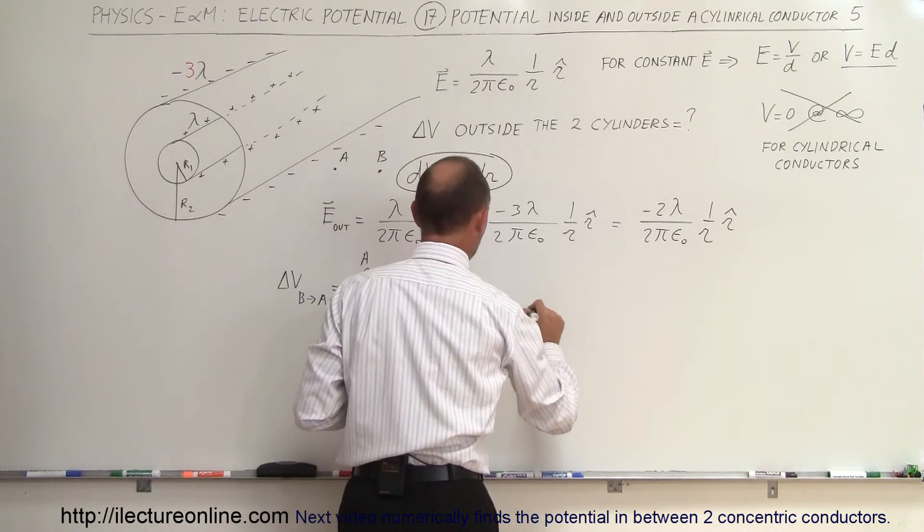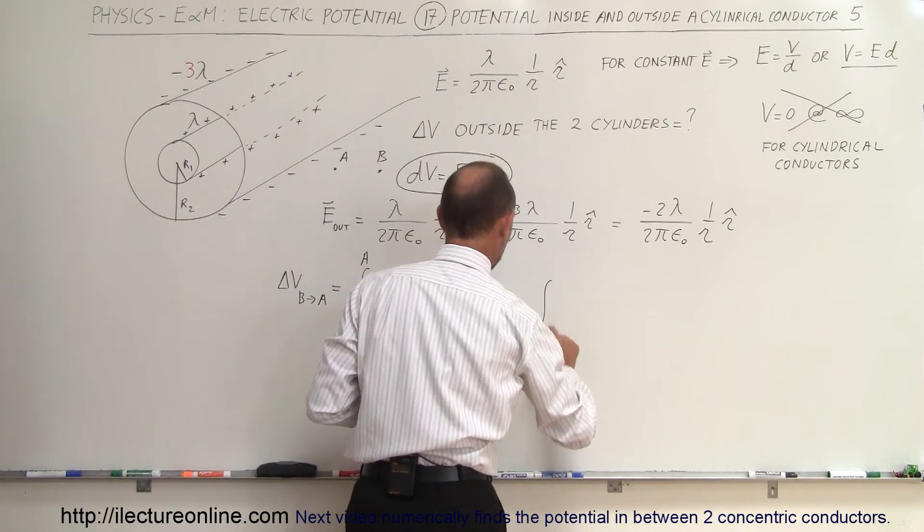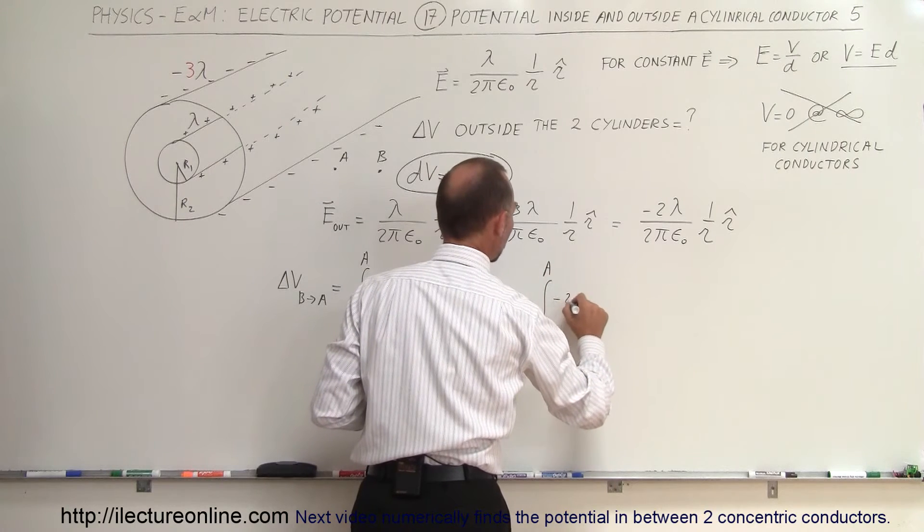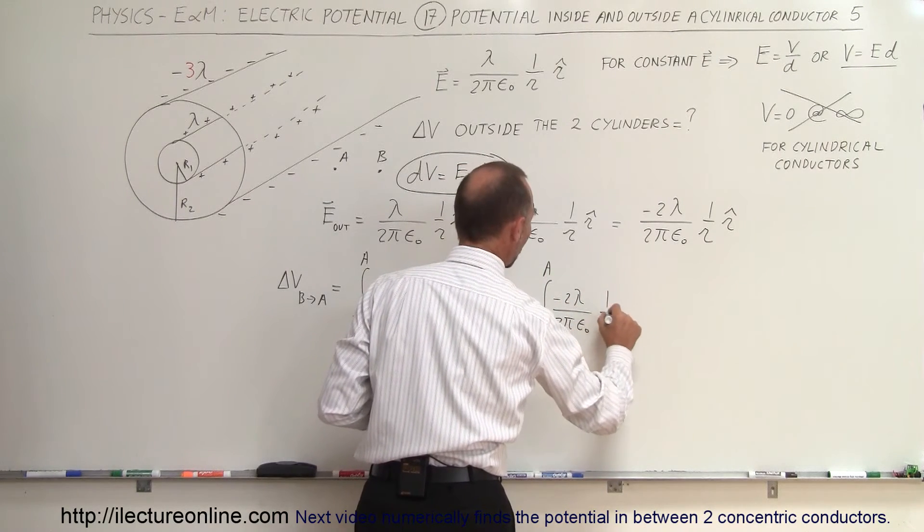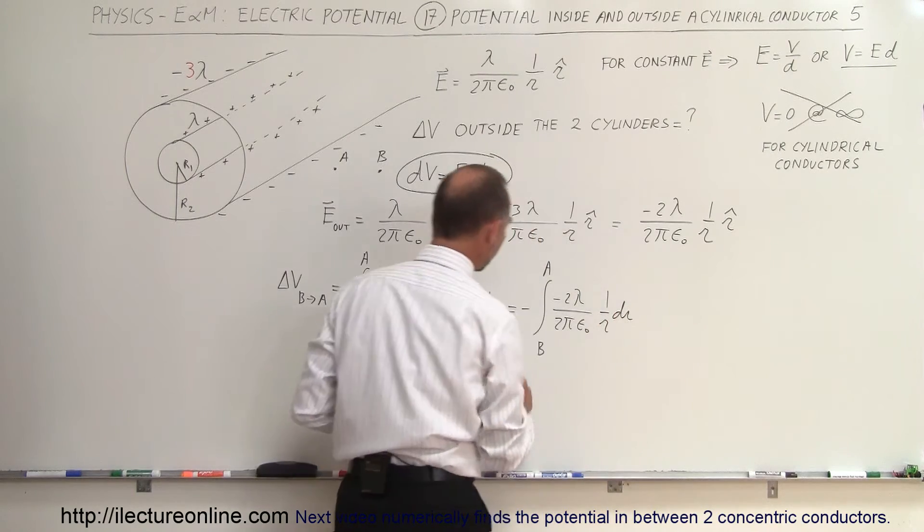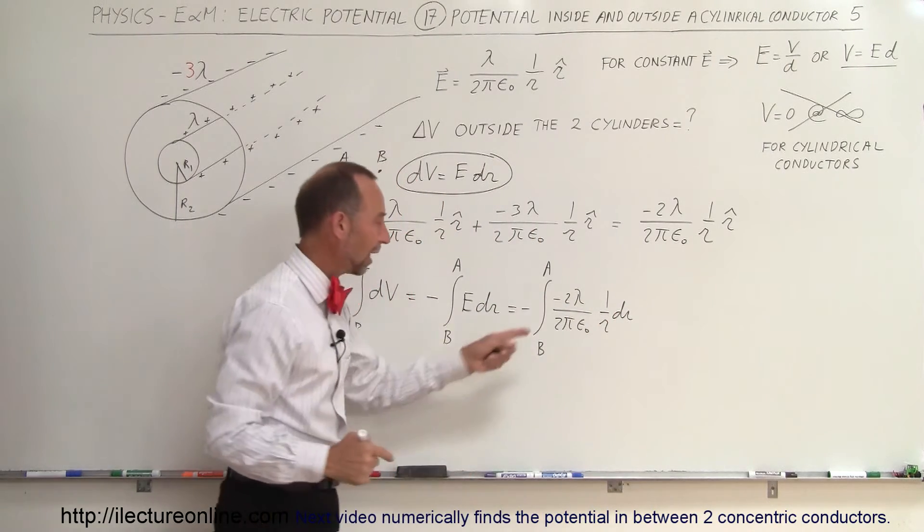So this is going to be equal to minus the integral from B to A of the minus 2λ divided by 2πε₀ times 1 over r dr. And of course those two negatives will cancel out.